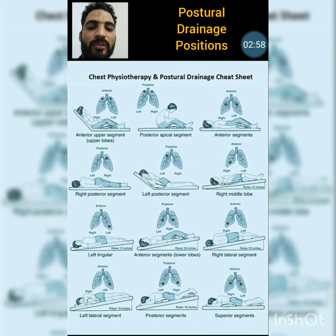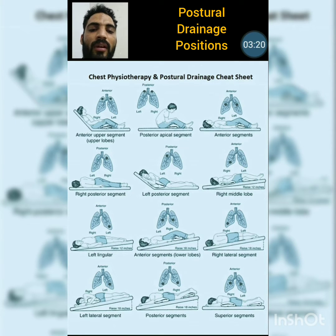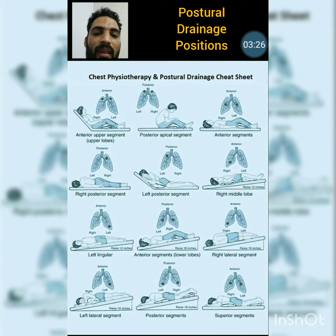The sixth position is used to eliminate sputum from the right middle lobe. As demonstrated, the patient is lying supine but oblique towards the opposite side, with a pillow placed just behind the right scapula. The therapist provides percussion over the anterior and anterior inferior area of the right lung, with the head side lower than the leg side and the bed raised approximately 12 inches.